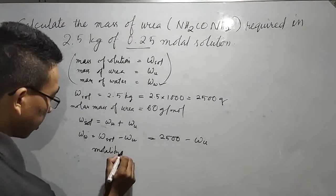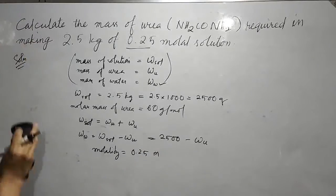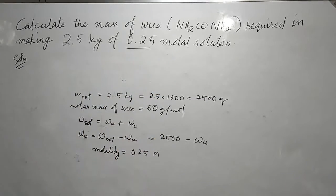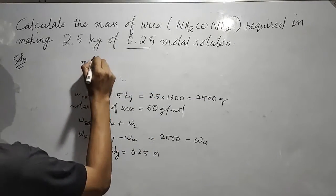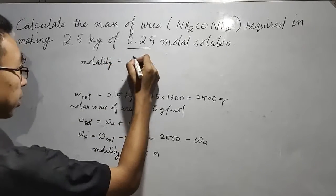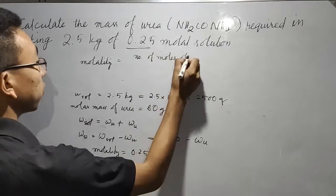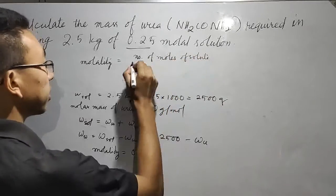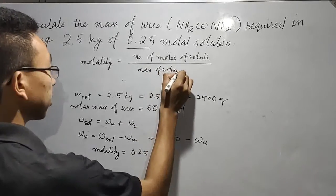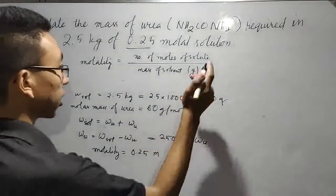Molality is given 0.25 molar. Now we know the formula: molality is equal to number of moles of solute divided by mass of solvent. If it is in grams, we multiply it by 1,000.